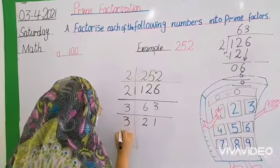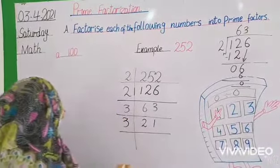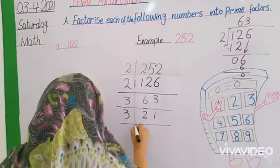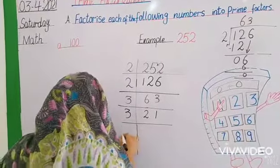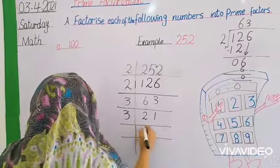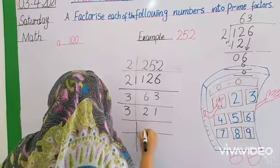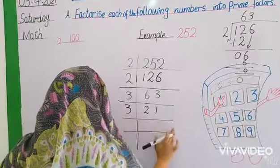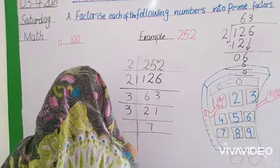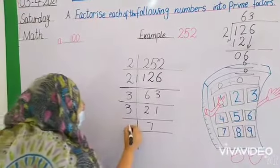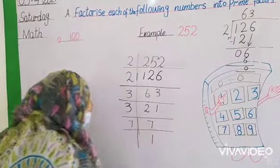Next we will use 3's table. Does 21 come in 3's table? Count 3's table. 21 comes, which is 7. Next we will do 7. Does 7 come in 7's table? 7 ones are 7.